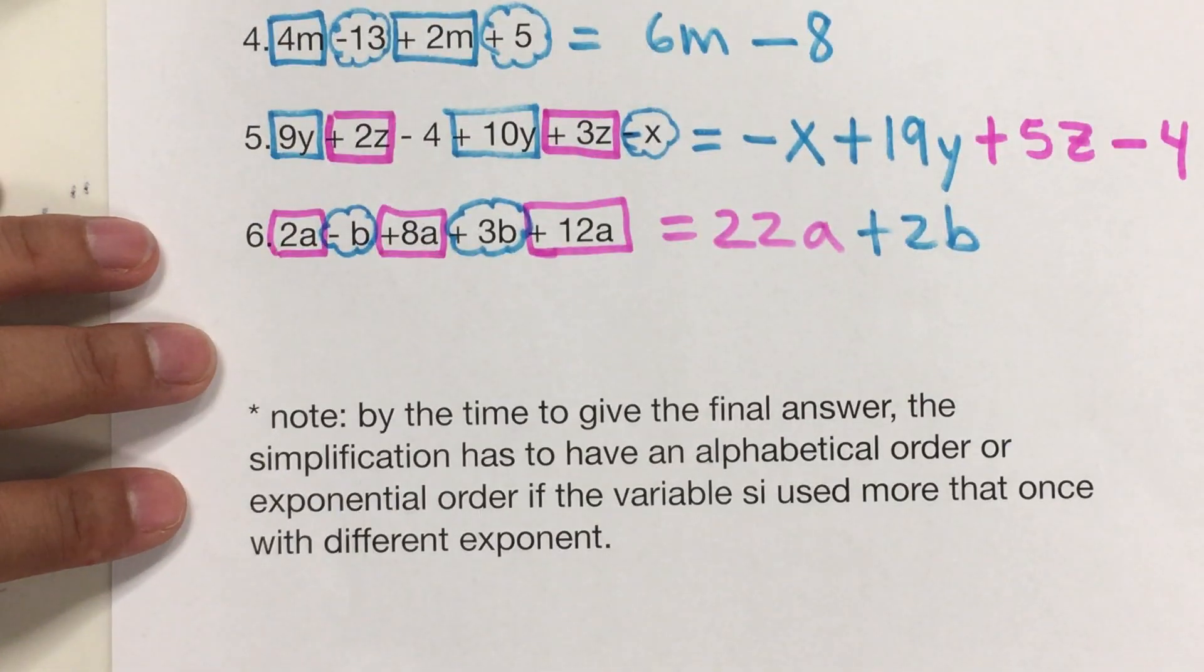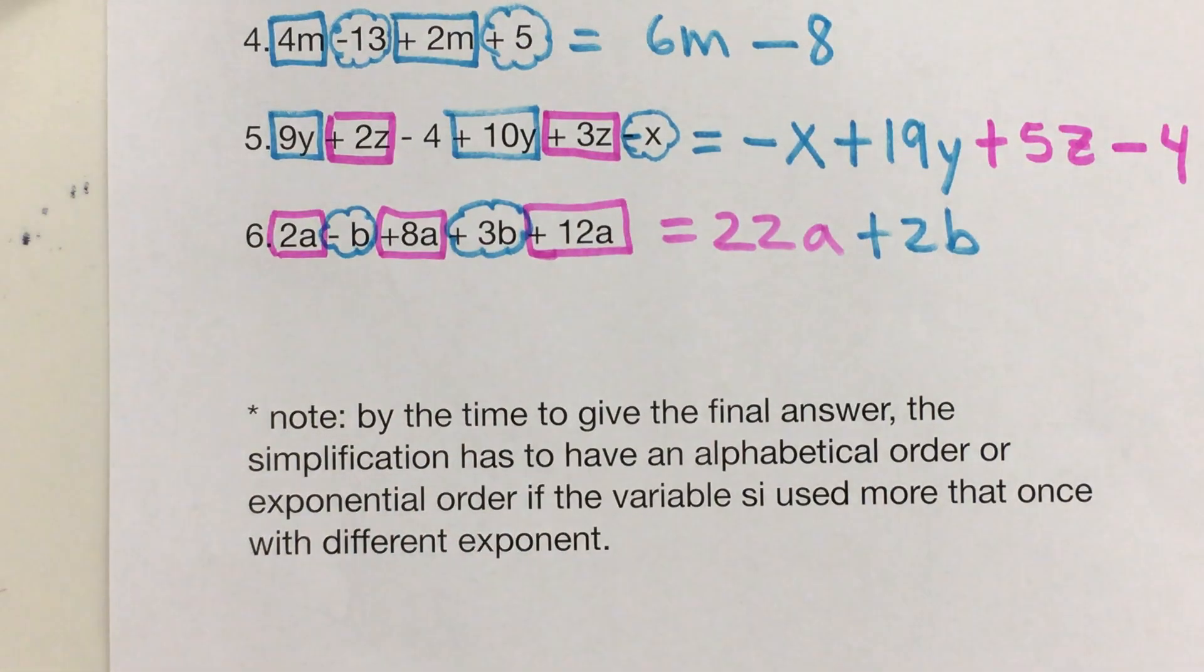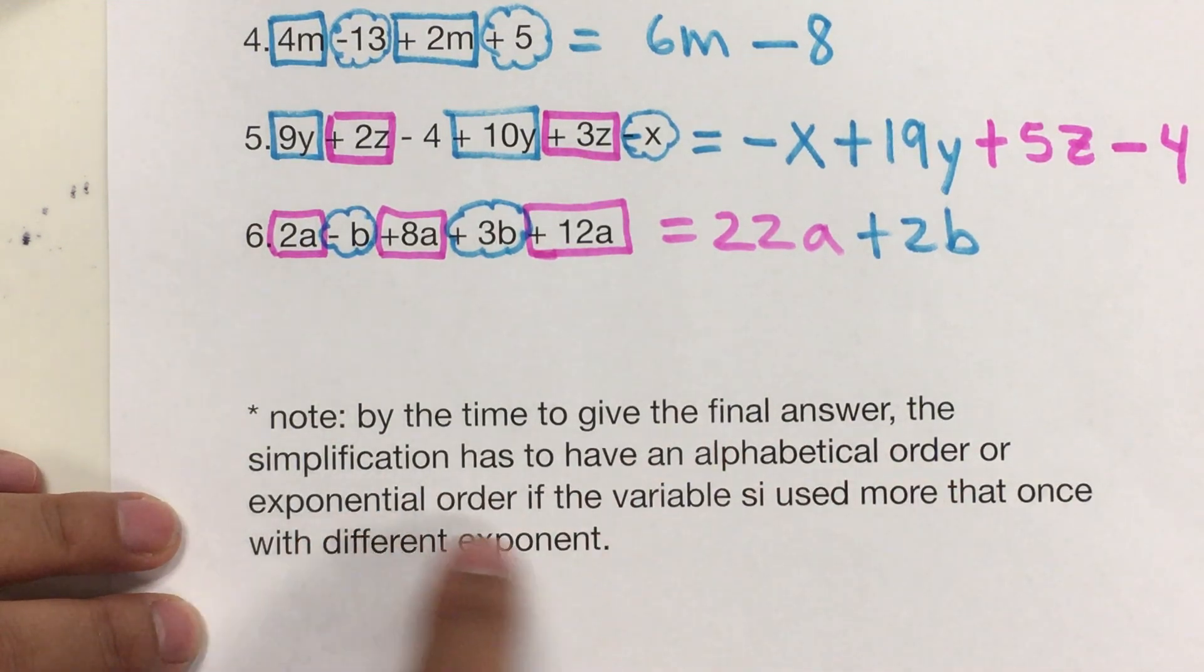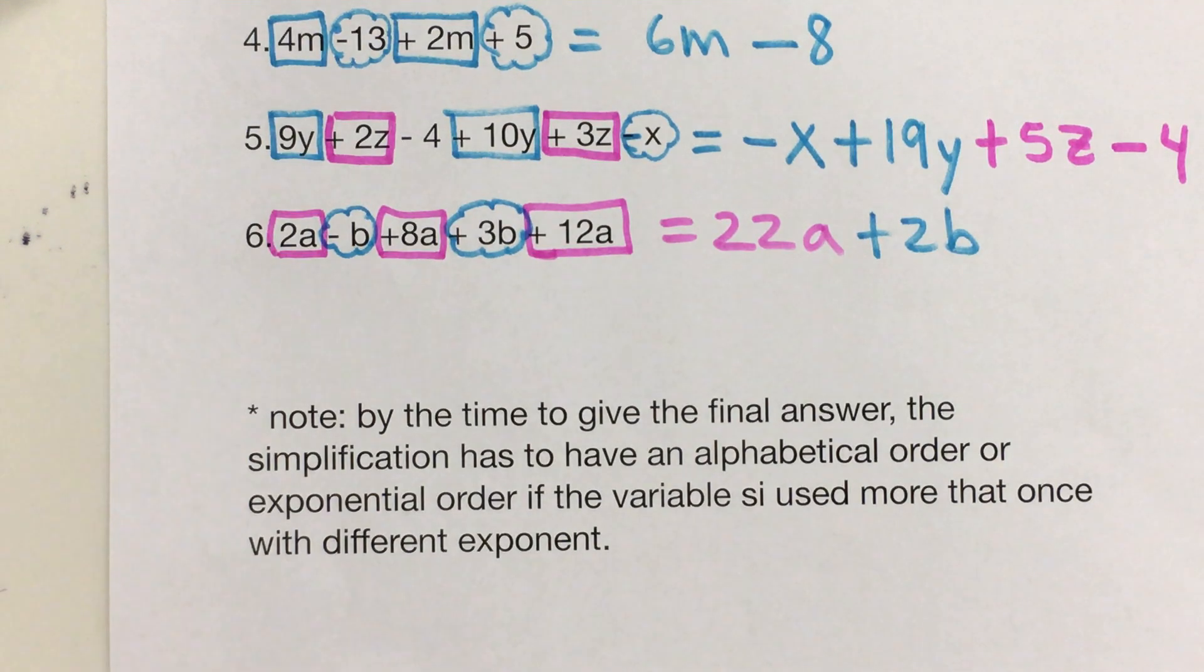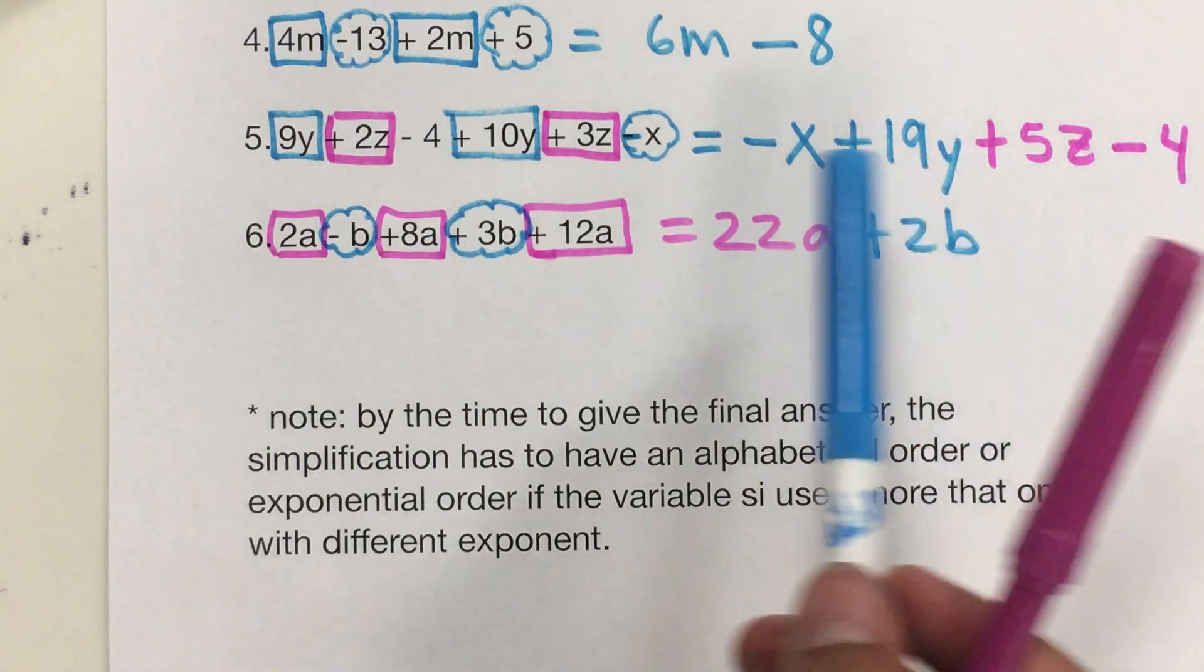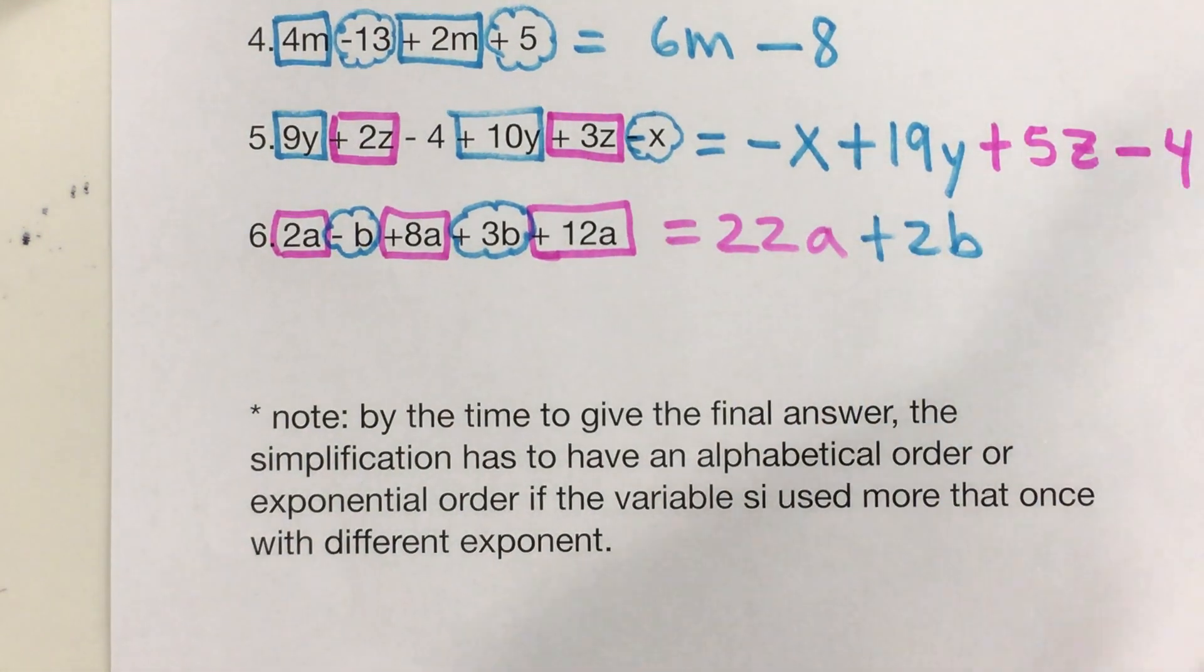Just a note in here. Note. By the time you give the final answer, the simplification has to have an alphabetical order. Exponential order if the variable is used more than once with different exponent. And the constant always at the end. The alphabetical order and the constant at the end.